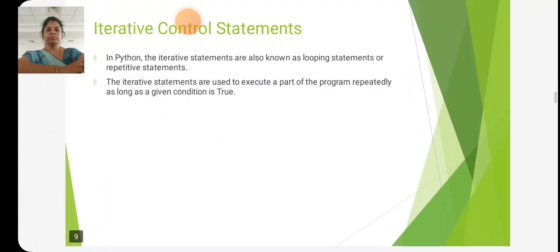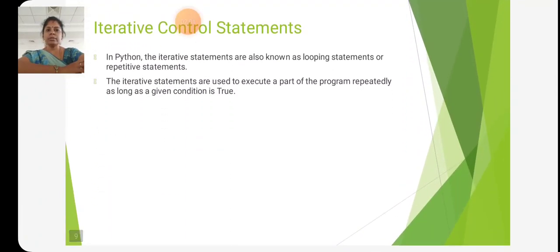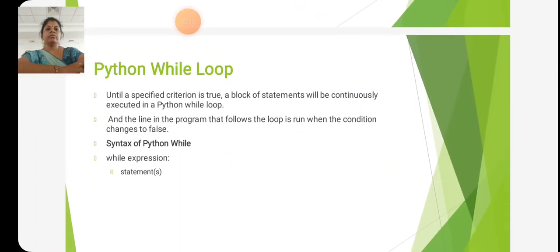Iterative control statements are also known as looping statements or repetitive statements. The repetitive statements are used to execute a part of the program repeatedly as long as the given condition is true.